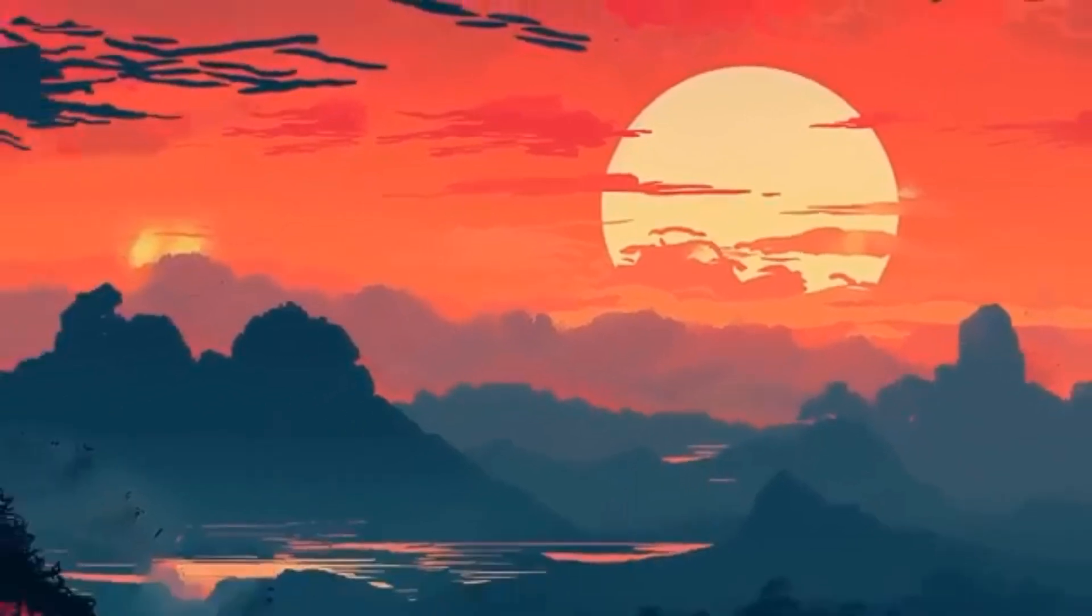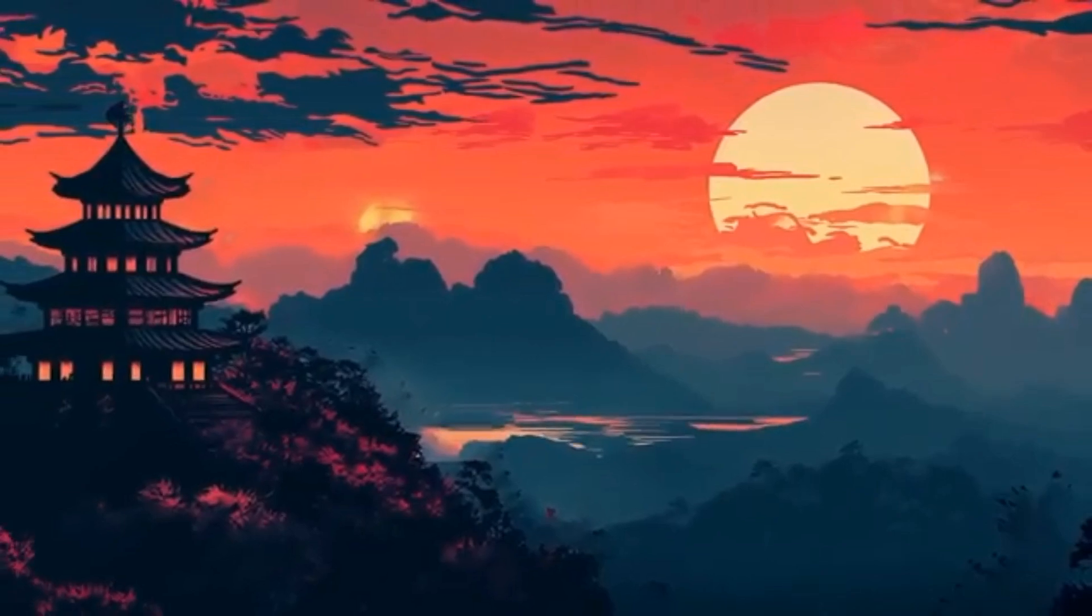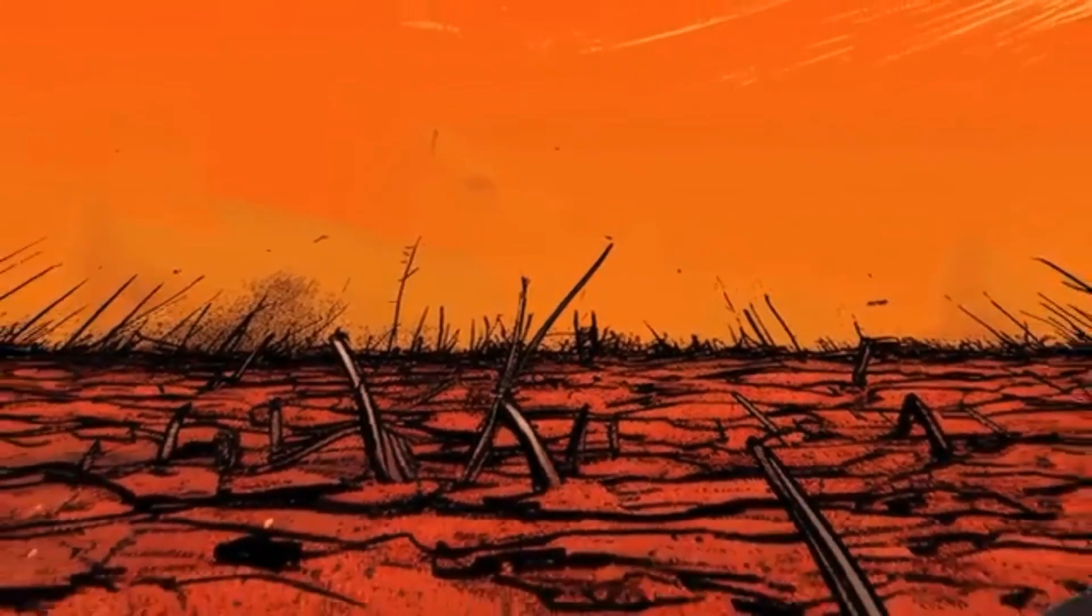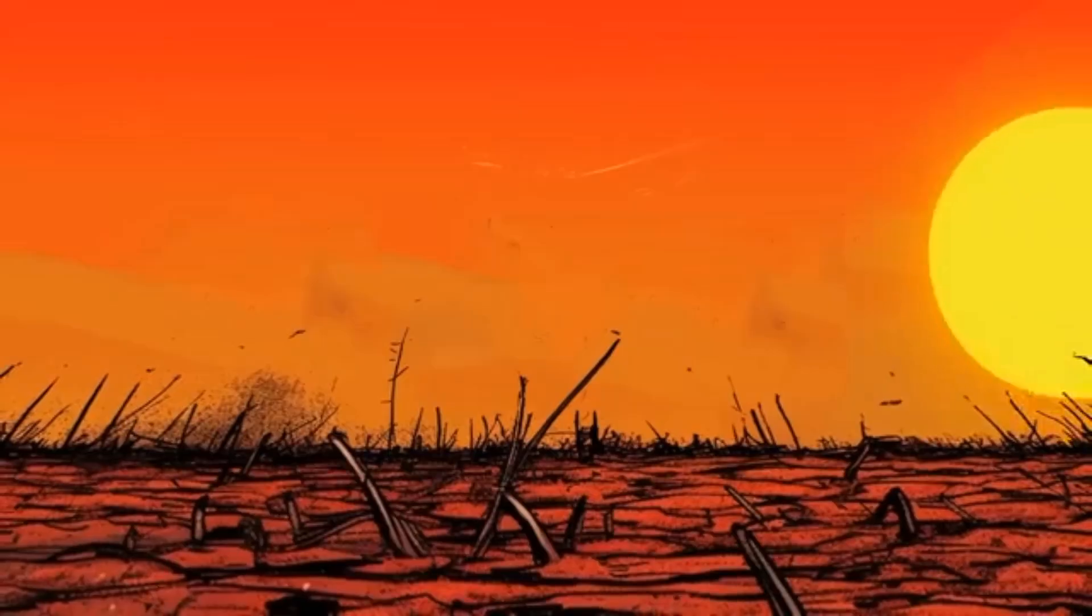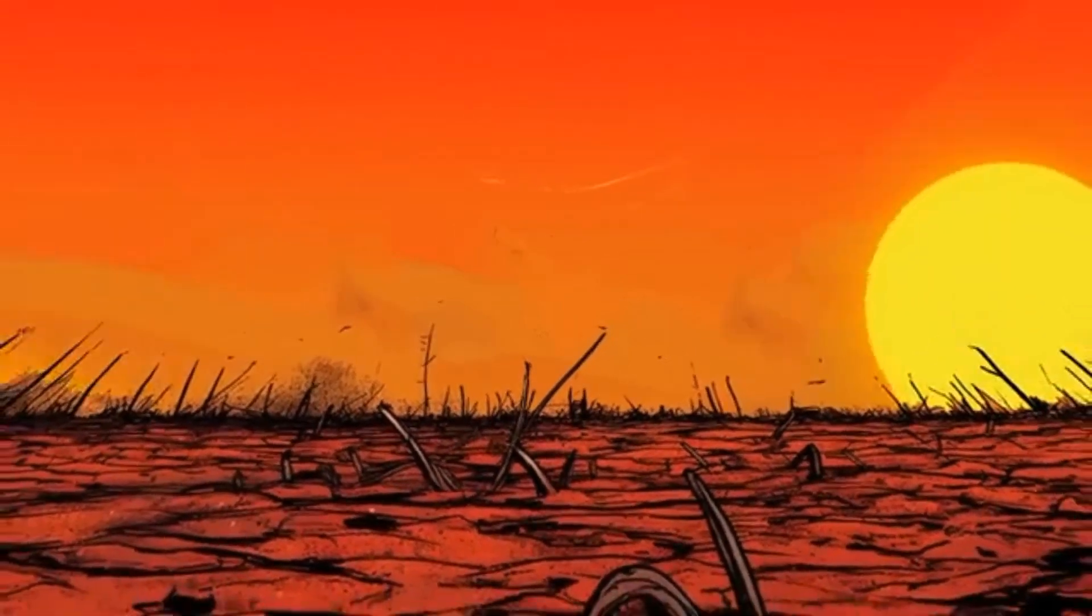According to ancient tales, thousands of years ago, there were seven suns in the sky. Six were large, and one was small. When all seven suns were in the sky, the earth became unbearably hot, making it impossible to grow crops or work during the day. There was no relief, as the suns never allowed night to fall.